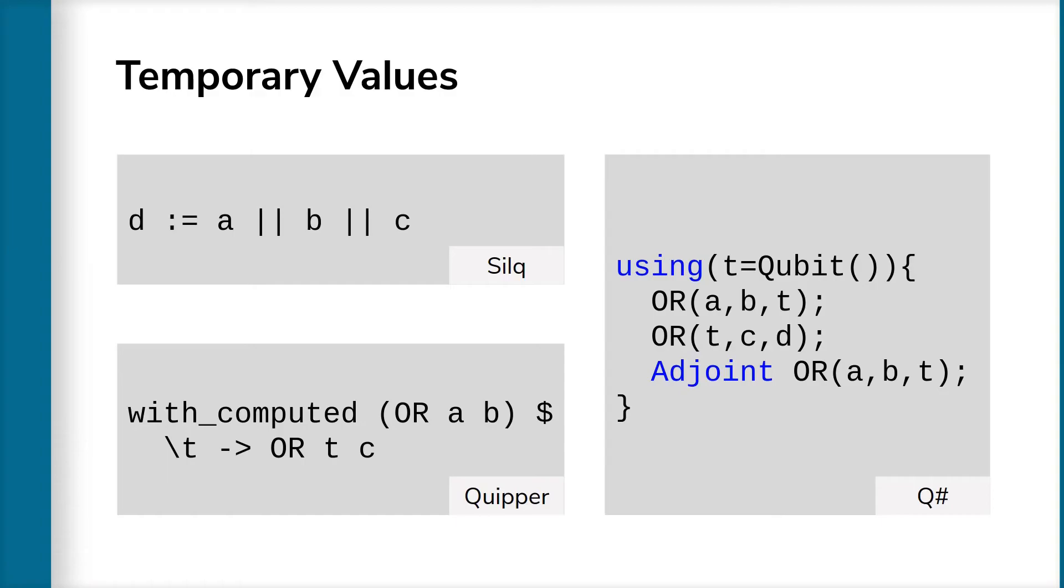In contrast, Zilk code handles uncomputation automatically and safely using a novel quantum type system we will discuss in the following.